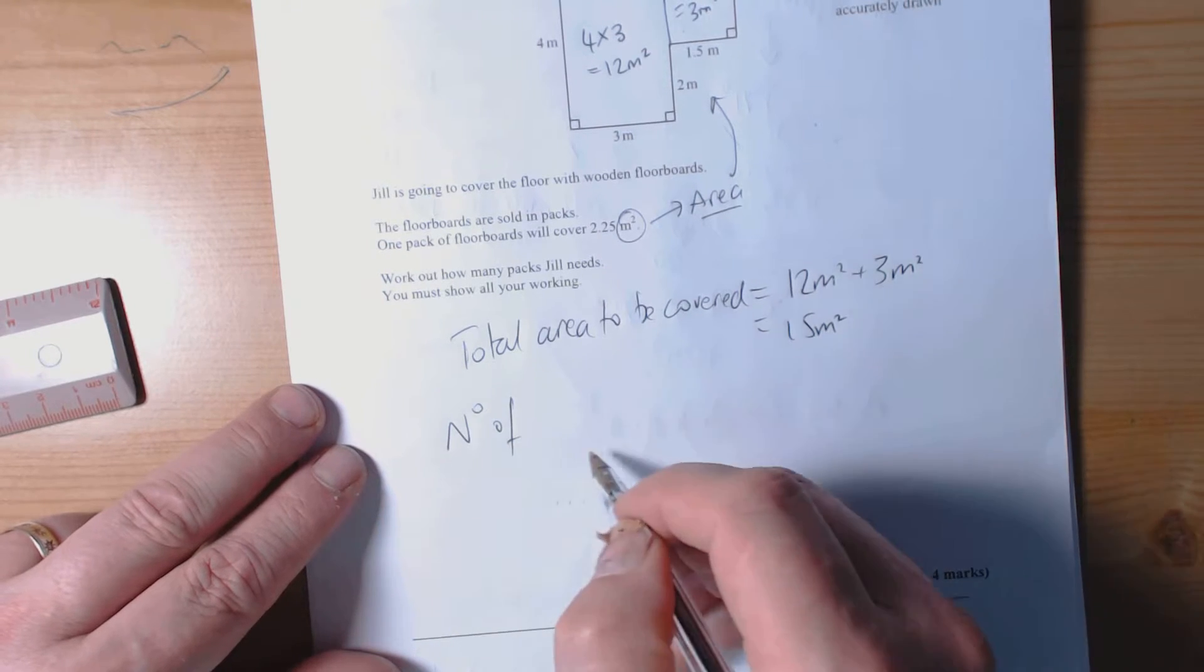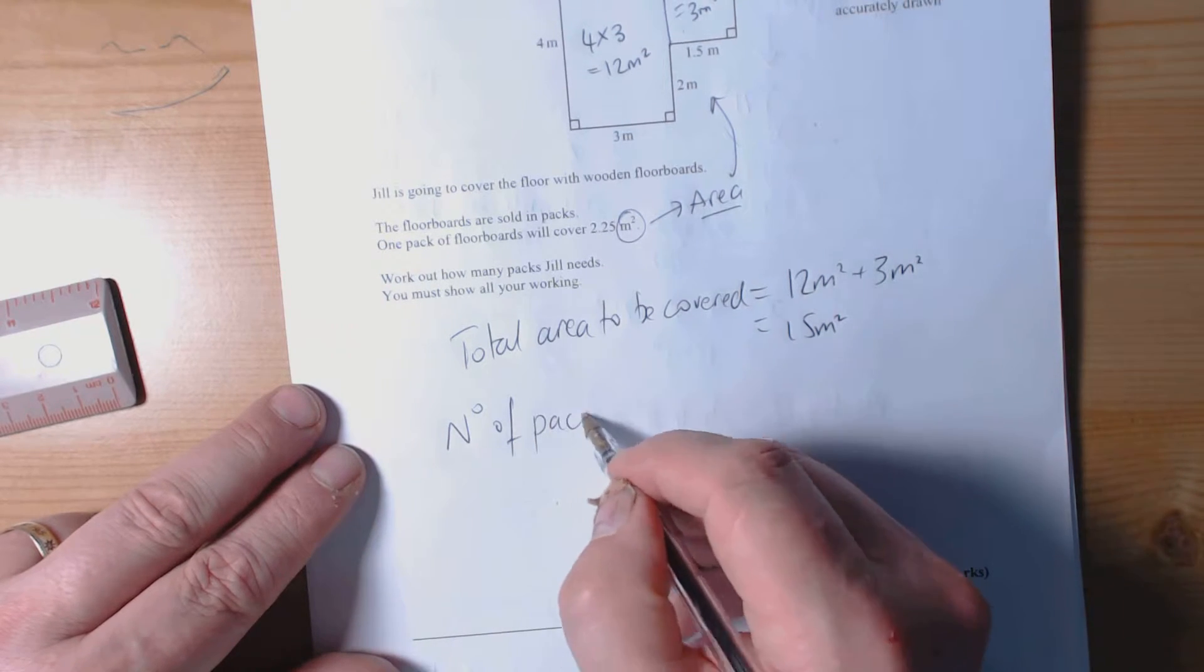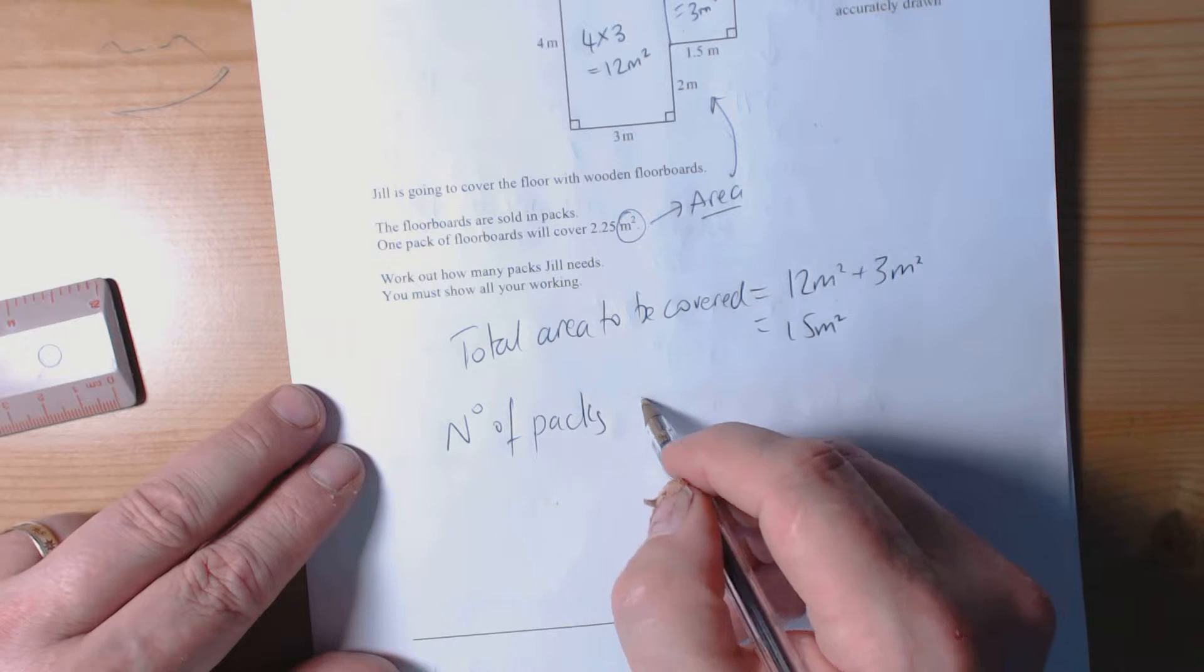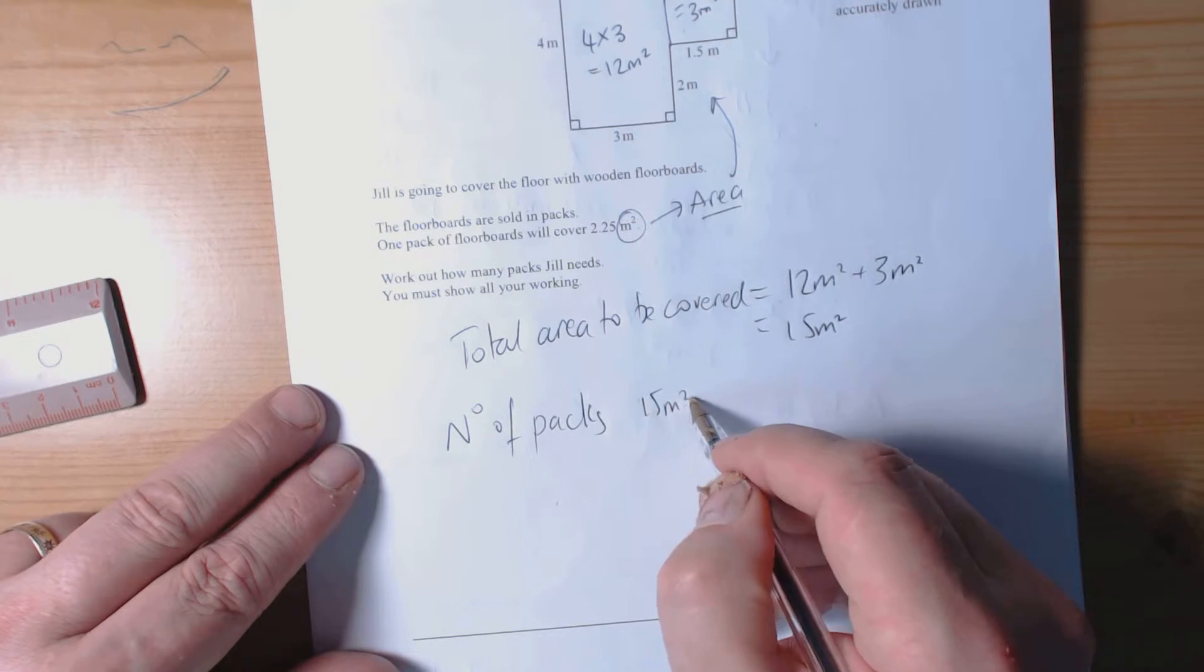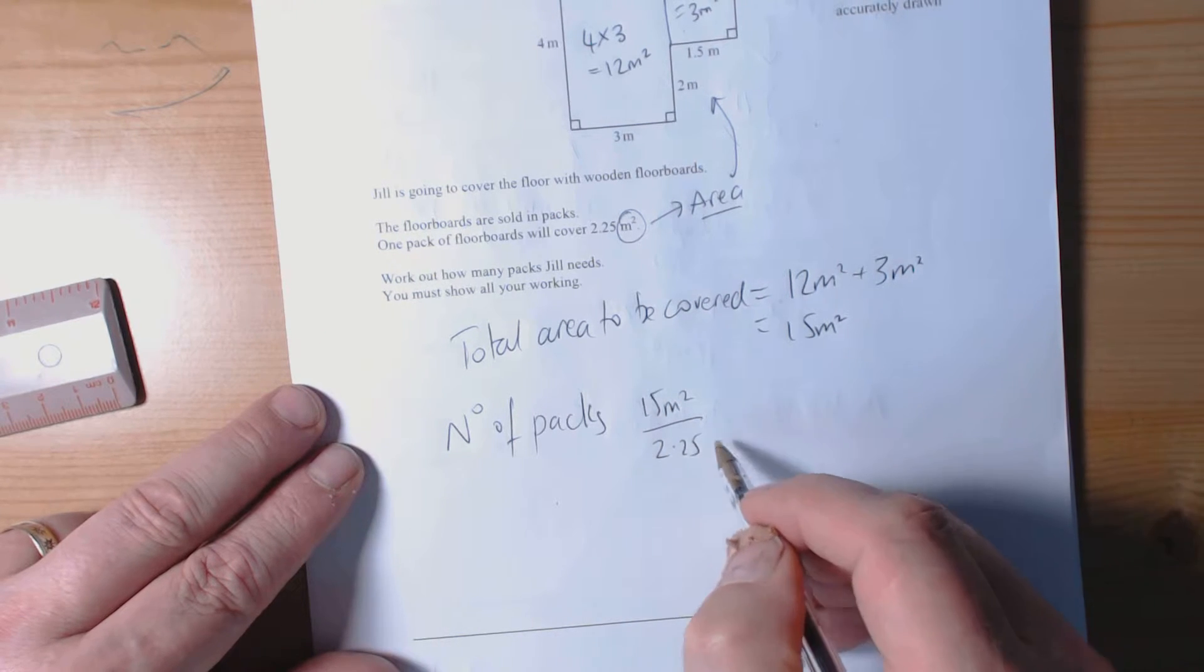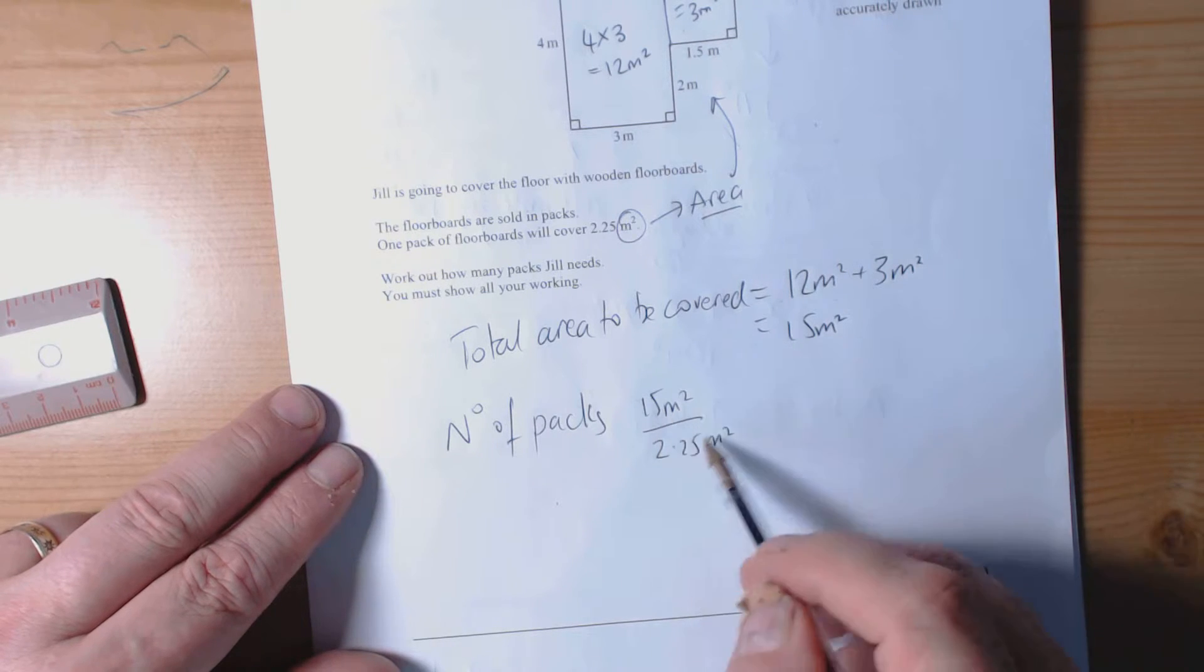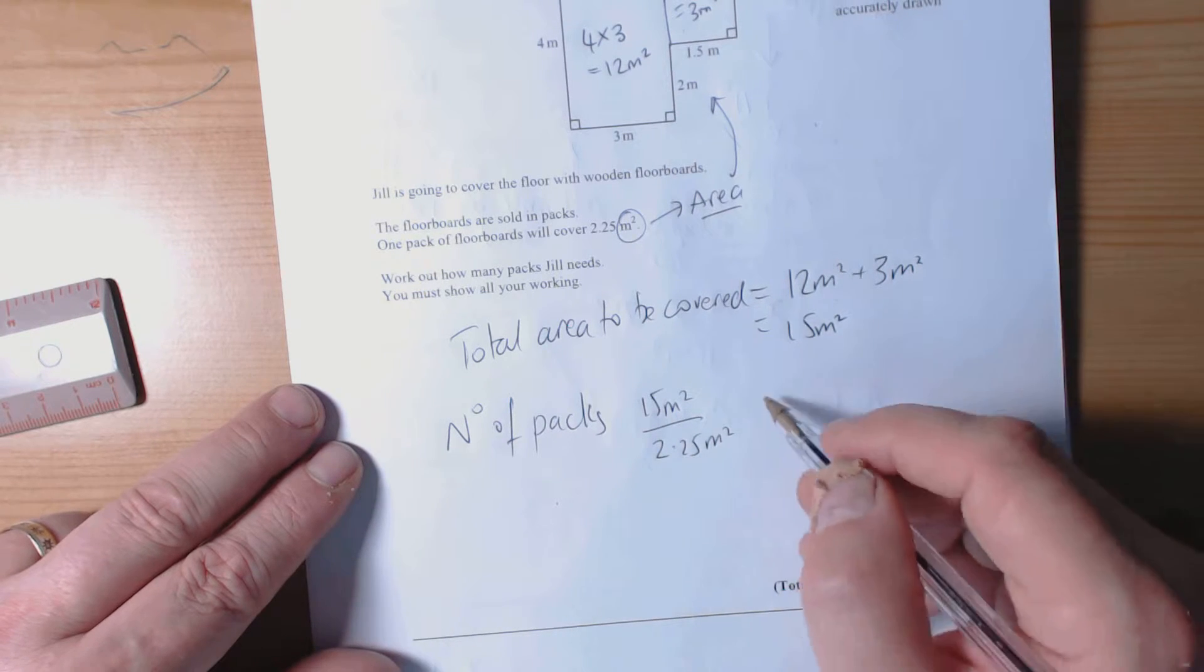Number of packs, again, to start the question, explain what you're doing as you go along. So the number of packs we can find by doing 15 divided by 2.25. Again, lots of different ways of doing this. We could just keep adding up 2.25.